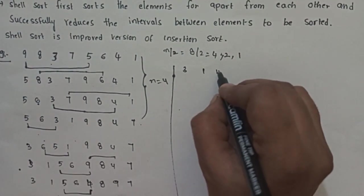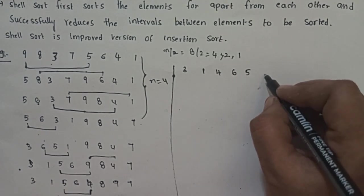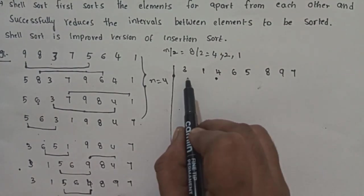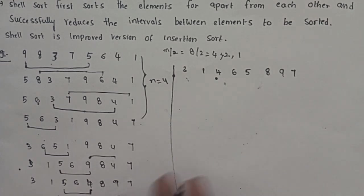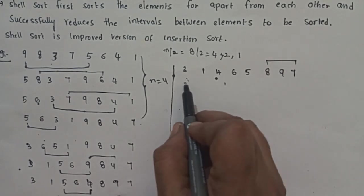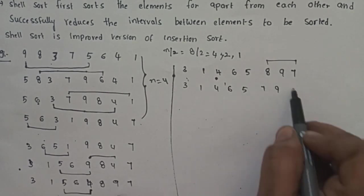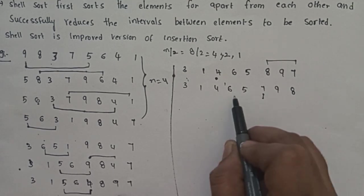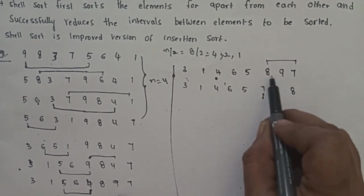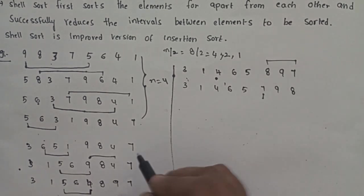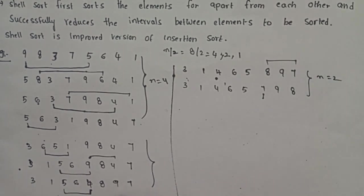Array after swaps: 3, 1, 4, 6, 5, 8, 9, 7. Back checking for 4: 2 elements back is 3, and 3 is less than 4, no swap needed. Comparing 8 and 7 — 8 is greater than 7, so swap. Array: 3, 1, 4, 6, 5, 7, 9, 8. Checking back: 6 is less than 7, no swap. Comparing 9 and 8 — checking 2-element gap. Interval is now reduced to 1.